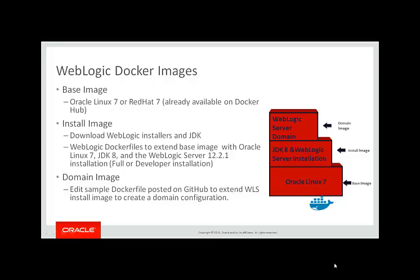To create the install image, one of the Docker files extends Oracle Linux 7 and then installs a JDK 8 and a WebLogic installation, either the generic installation or the developer installation. To create this image, you would first pull the Oracle Linux 7 image from Docker Hub, download the WebLogic installers and the JDK, and by running the Docker file you will create the WebLogic Server install image.